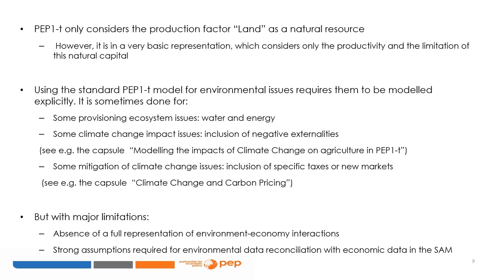Using the standard PEP-1-T model for environmental issues requires them to be modeled explicitly. In some works, topics of ecosystem services delivery are sometimes addressed by including water or energy activities in the supply side of the economy. Climate change impacts are sometimes addressed by including negative externalities, and climate policy issues are sometimes included through specific taxes or new markets. Such approaches are limited, however, given the lack of a full representation of environmental-economic interactions in the standard PEP-1-T framework and the strong assumptions often required for environmental data reconciliation with the social accounting matrix.